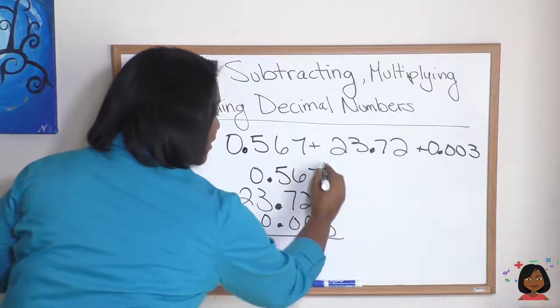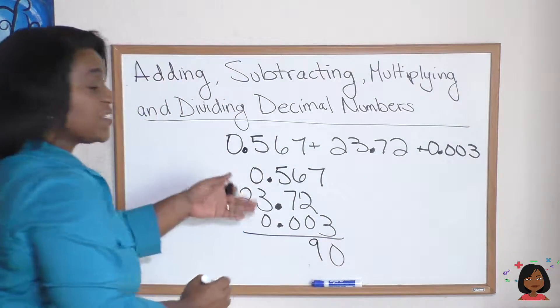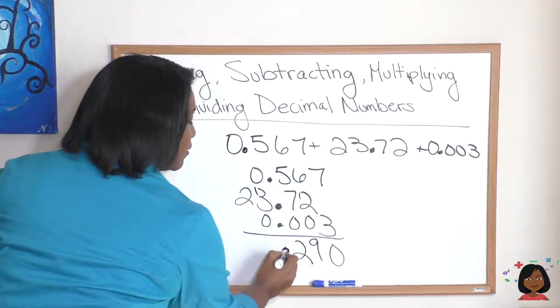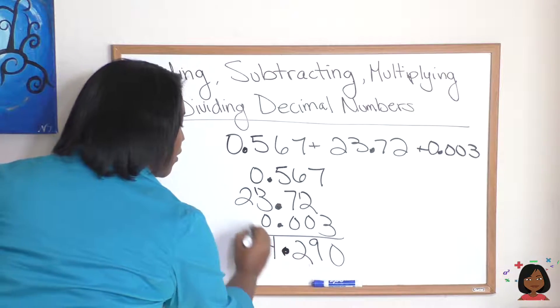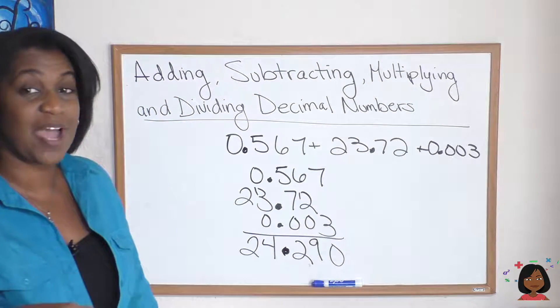Now just add as normal: 7 and 3 is 10, 6 and 2 is 8, 1 is 9, 7, 5 is 12, and there's my decimal, 3 and 1 is 4, and bring down my 2. Our answer: 24.290. Easy!